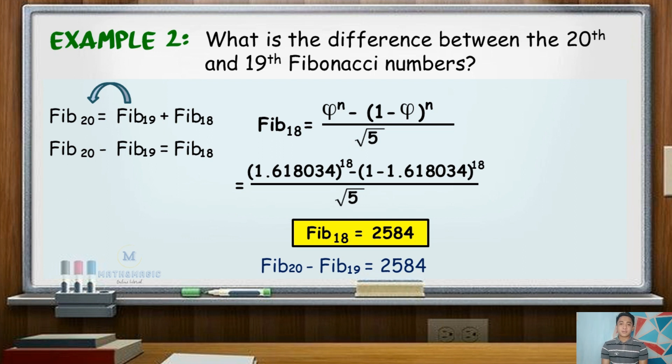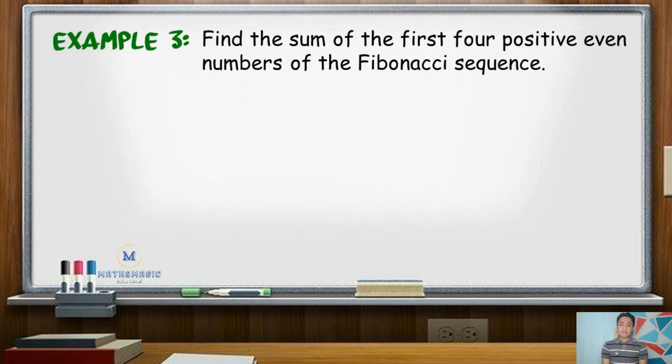For our third example, find the sum of the first 4 positive even numbers of the Fibonacci sequence. For this example, it is better for us to use the listing method since we do not know the position of the even terms or numbers.